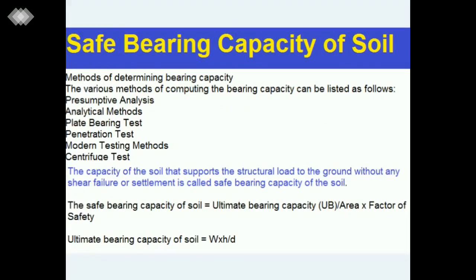What are the methods for determining the safe bearing capacity of the soil? The various methods are: first, presumptive analysis; second, analytical methods; third, plate bearing test; fourth, penetration test; fifth, modern testing methods; and sixth, centrifuge test. The capacity of soil that supports the structural load to the ground without any shear failure or settlement is called the safe bearing capacity of the soil.